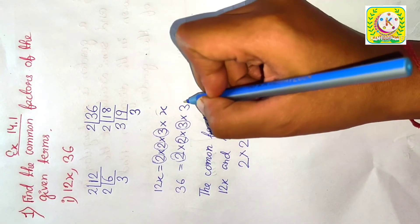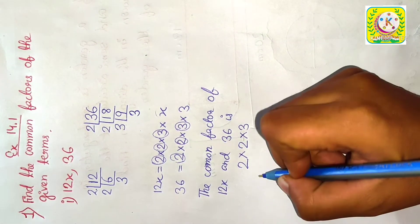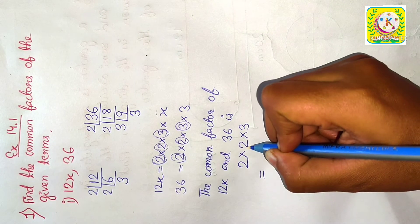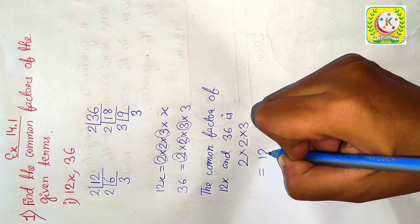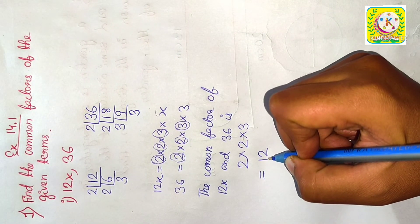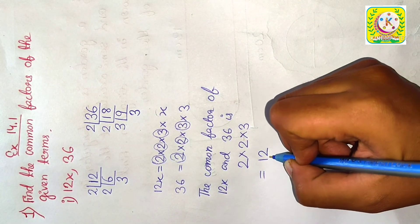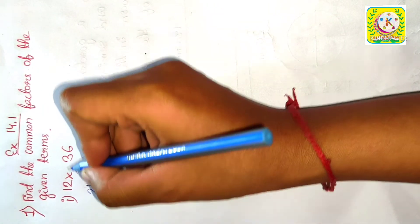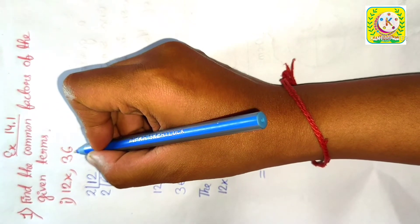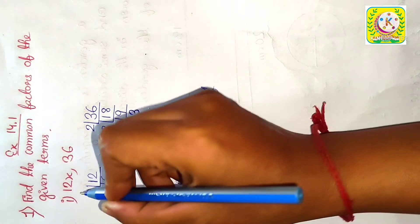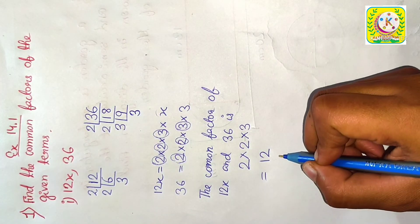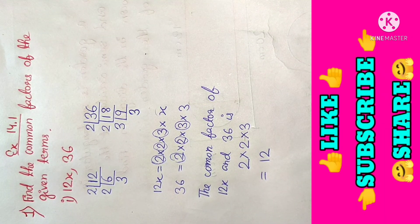Next, we have x here; here we don't have x, so we will stop here and we will multiply: 2 into 2 is 4, 4 into 3 is 12. That means 12 is the common factor of 12x and 36. That means 12 can divide 12x, we will get x; 12 can divide 36, we will get 3. So, the common factor of these two terms is 12, which is our final answer.